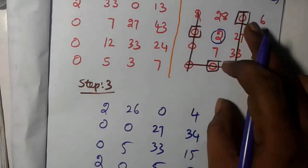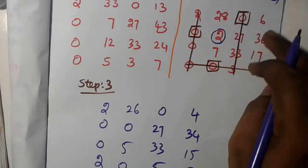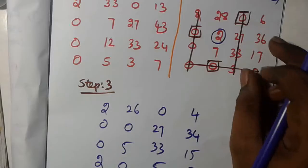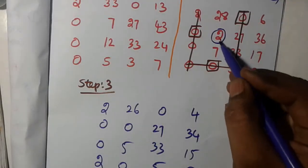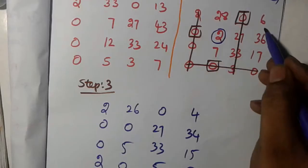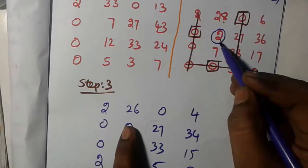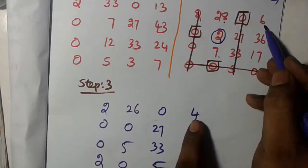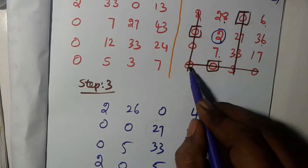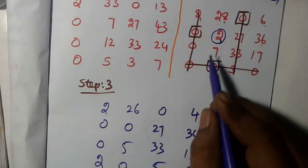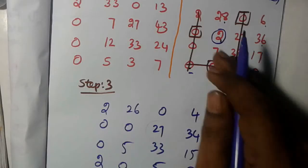Repeat the assignment step again. Now we have 4 lines covering all zeros, which means the assignment is complete. The outside uncovered elements use the small number 2. Subtract 2 from outside elements and add 2 at intersecting positions. The relevant values are 5, 4, 34, and 15.